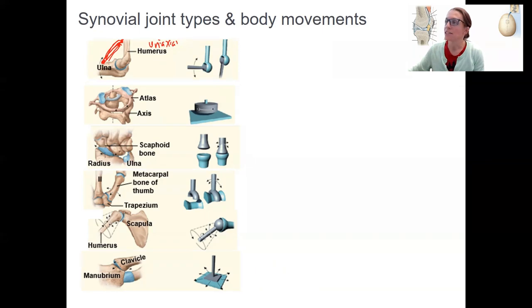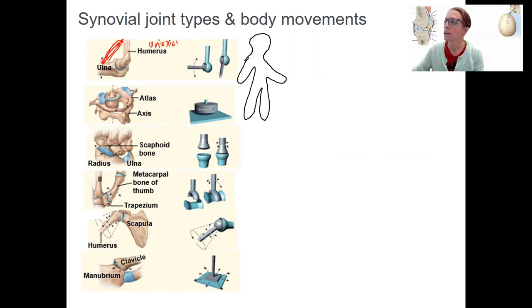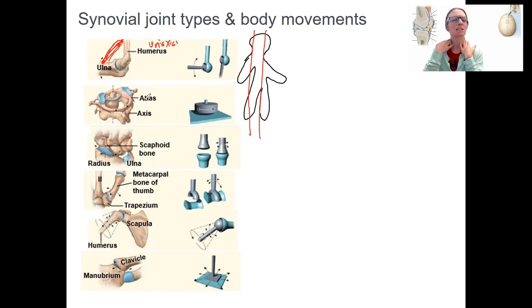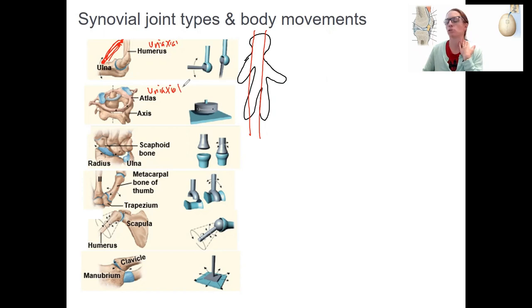Other joints can act in more than one plane or axis. Here is our sagittal plane — movements in this direction are going to be flexion and extension. The atlas and axis is an example of a pivot joint. Because of where the head is and where it's rotating, this moves in the transverse plane. Uniaxial — these joints are always uniaxial, though they might not always be moving in the transverse plane depending on their location.